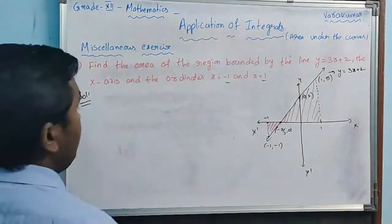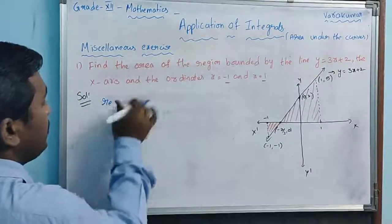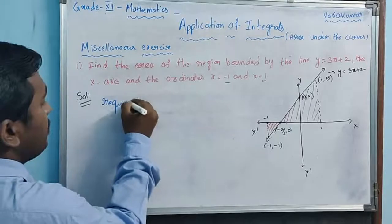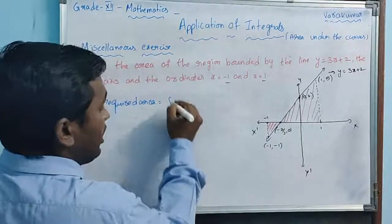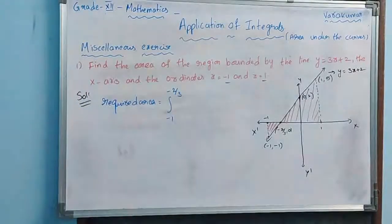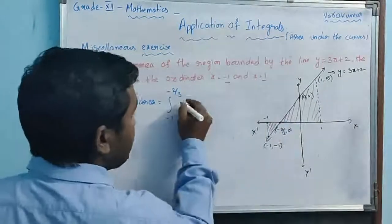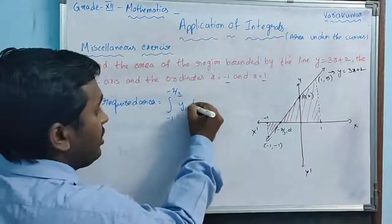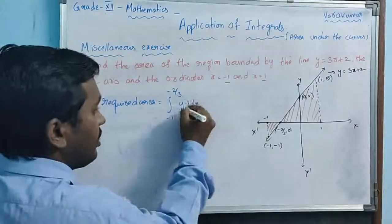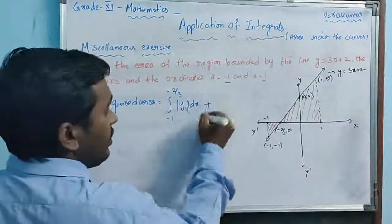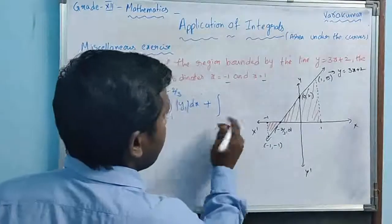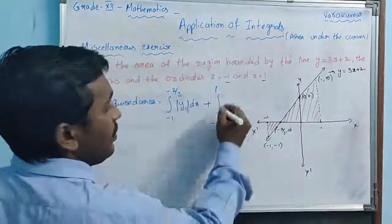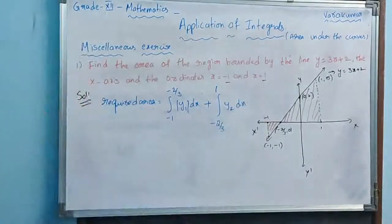The required area equals the integral from -1 to -2/3 of |y₁| dx plus the integral from -2/3 to 1 of y₂ dx. The limits for the first part are -1 to -2/3 because that section is below the x-axis, so we apply the modulus.